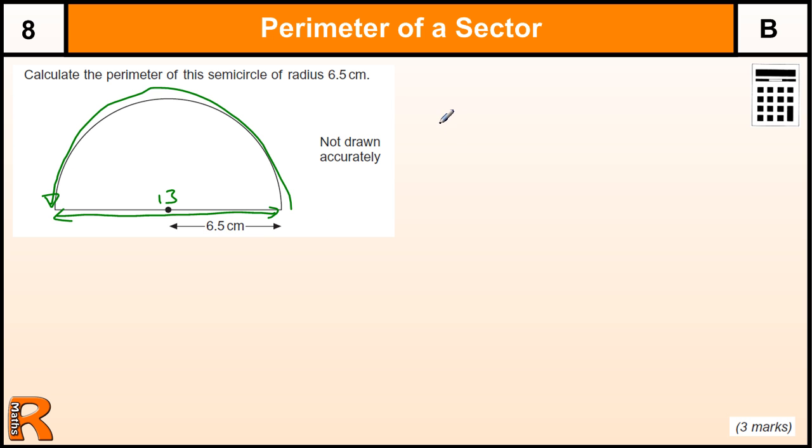The circumference of a circle is pi times the diameter. Now you're not going to be told that formula, so you need to know it.